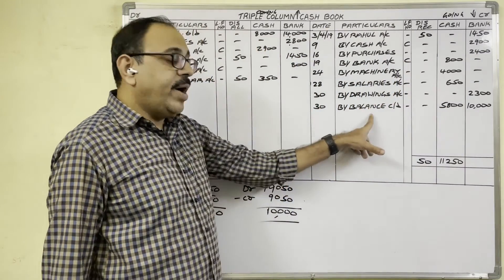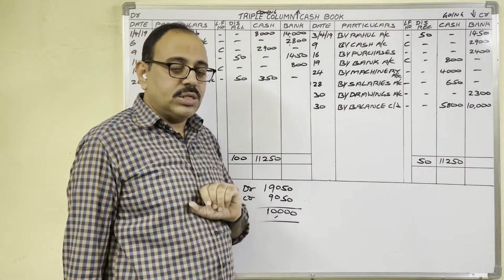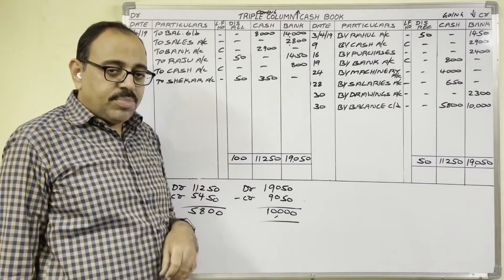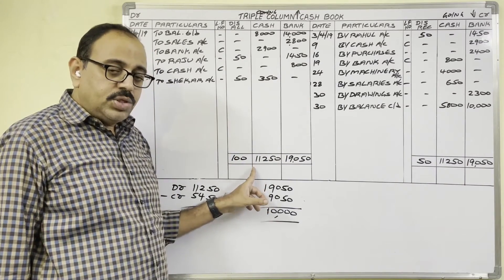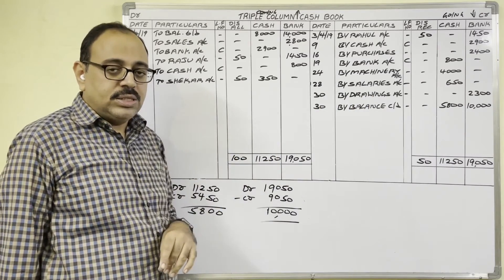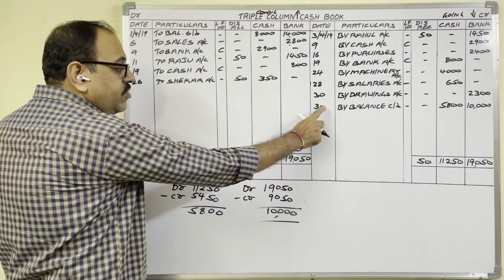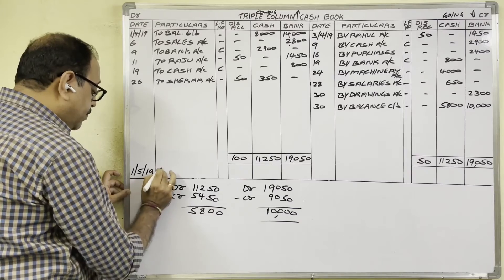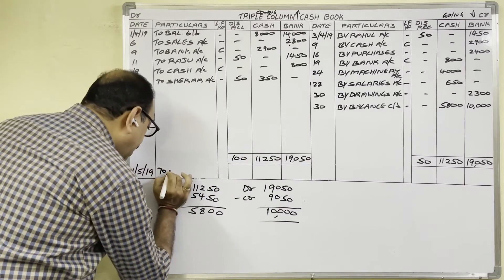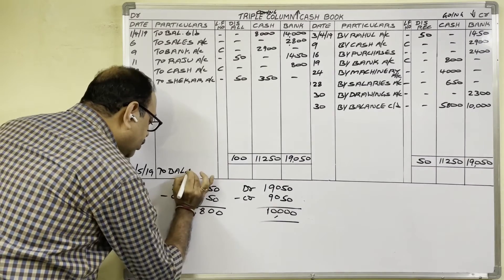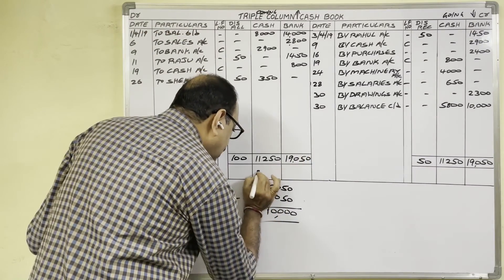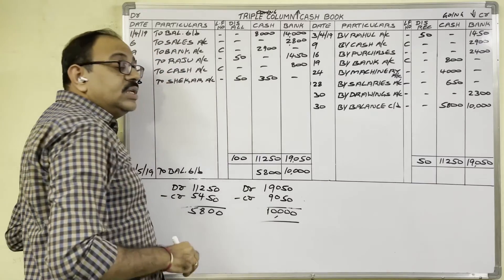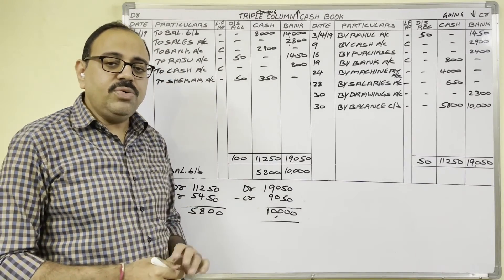Both sides of the bank column total to 19,050 rupees, completing the April month cash book. Since continuation is into May, we bring forward both balances with the next date. Write 'To Balance b/d': in the cash column 5,800 rupees and in the bank column 10,000 rupees. This is the end of the present video. Hope this video is helpful to you. Thank you.